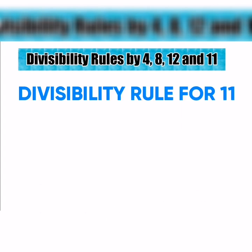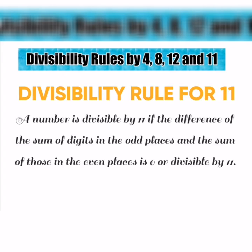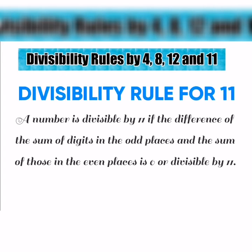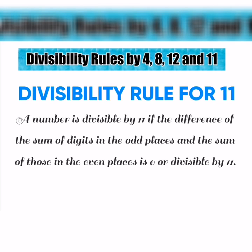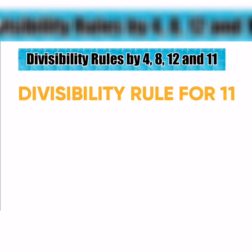Next, the divisibility rule for 11: A number is divisible by 11 if the difference of the sum of digits in the odd places and the sum of those in the even places is 0 or divisible by 11.